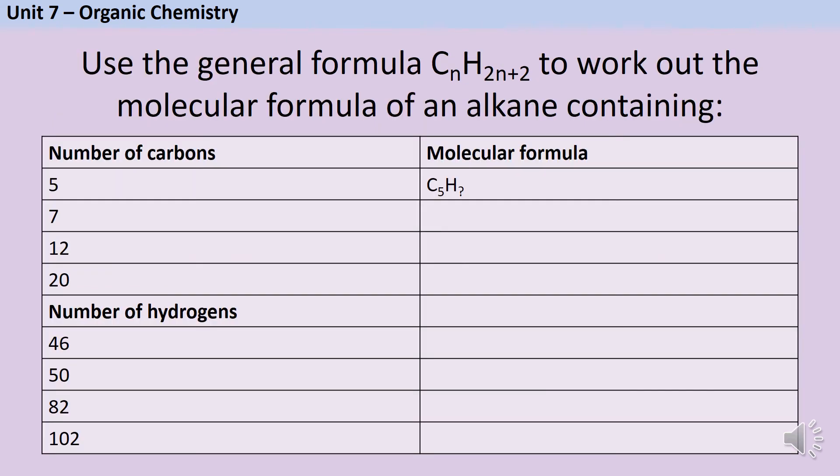Let's practice this now. So let's say I want to know what the molecular formula will be of pentane which is the alkane with five carbons. Five is my n so I've got C5 and then to work out how many hydrogens there are going to be I need to do 2n+2 so 2 times 5 plus 2 is going to be 12 and that tells me there must be 12 hydrogen atoms so my molecular formula would be C5H12.